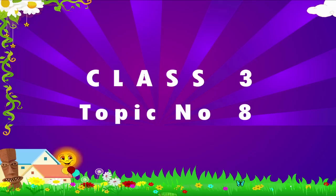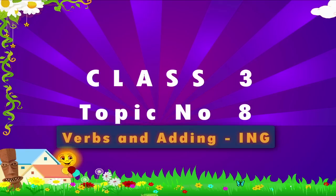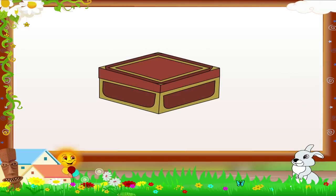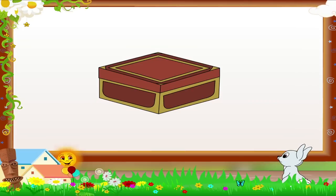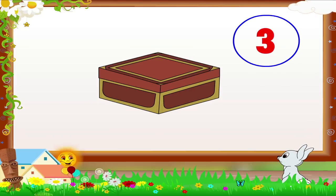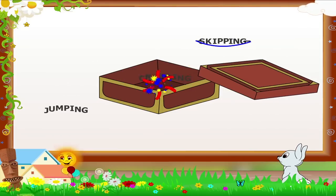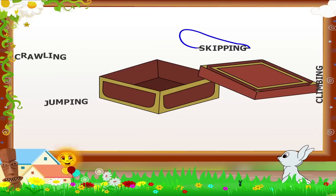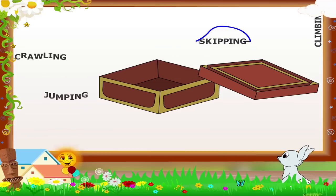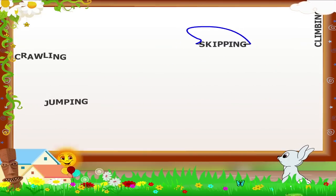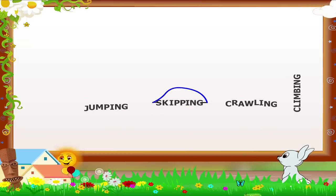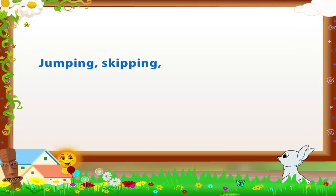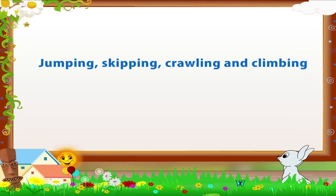Class 3, topic number eight: verbs and adding -ing. Rainbow, look what I've got you — a magic box! Let us open it on the count of three: one, two, three. Jumping, skipping, crawling, climbing! My goodness, what is happening? Yes, Rainbow, these are action words — jumping, skipping, crawling, and climbing — doing their actions.